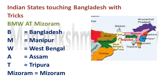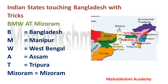Next is Bangladesh — Indian states touching Bangladesh. The trick is 'BMW at Mizoram.' B stands for Bangladesh, M stands for Manipur, W stands for West Bengal, A stands for Assam, T stands for Tripura, and Mizoram stands for Mizoram. So 'BMW at Mizoram' is the trick to remember the states touching Bangladesh.